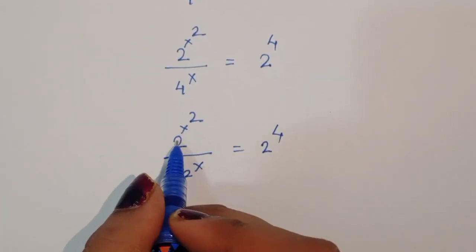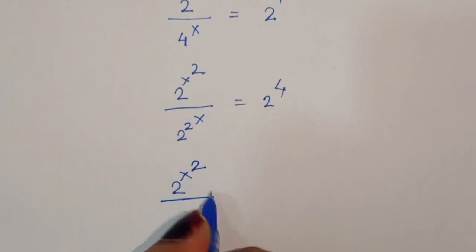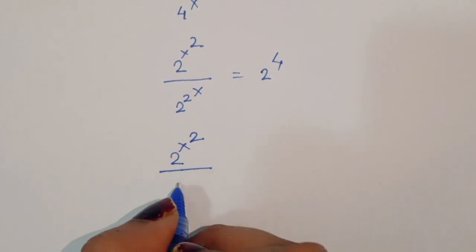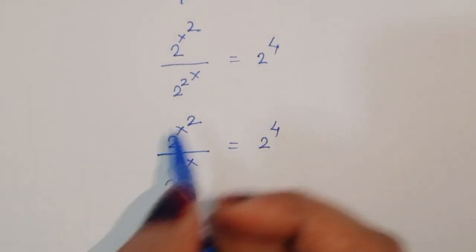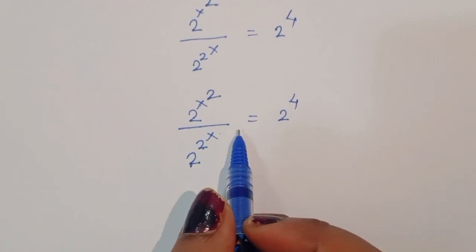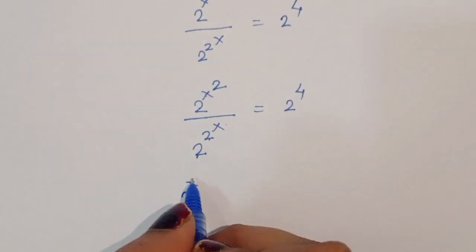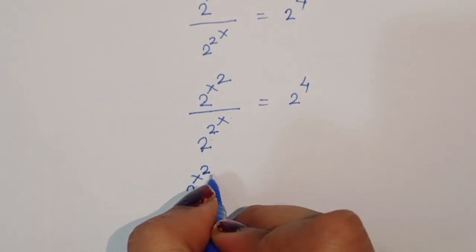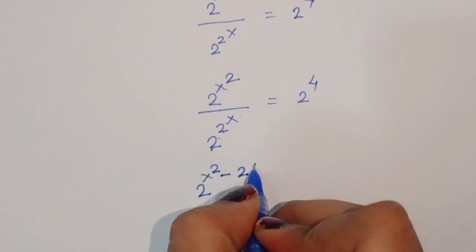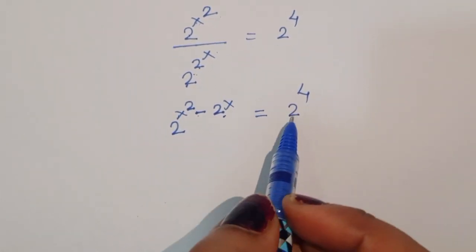Now we can write x squared in the numerator and 2x in the denominator. Using exponent rules, 2 power x squared divided by 2 power 2x gives us 2 power (x squared minus 2x) is equal to 2 power 4.